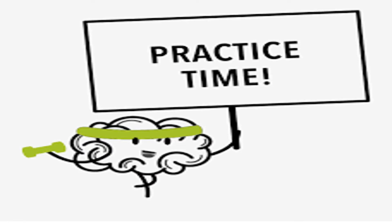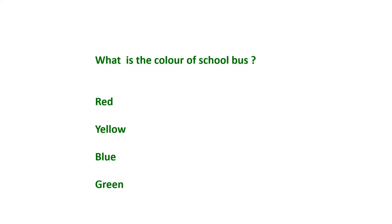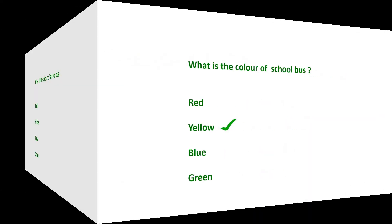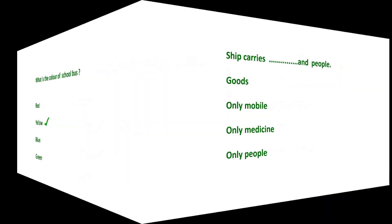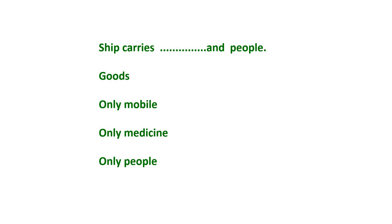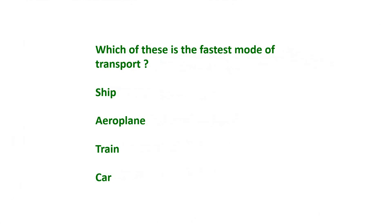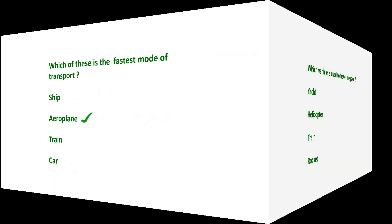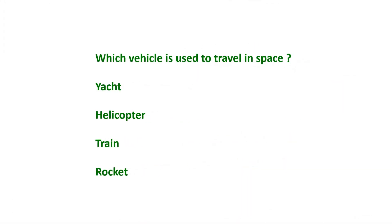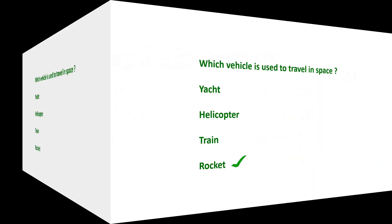Now it's time to practice some questions. Question one: What is the color of school bus? Options: red, yellow, blue or green. The correct option is yellow. Question two: Ship carries dash and people. Options: goods, only mobile, only medicine or only people. The correct option is goods. Question three: Which of these is the fastest mode of transport? Options: ship, aeroplane, train or car. The correct option is aeroplane. Question four: Which vehicle is used to travel in space? Options: hatch, helicopter, train or rocket. The correct option is rocket.